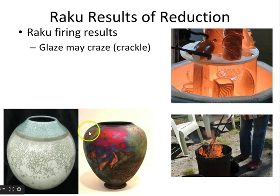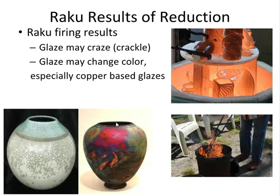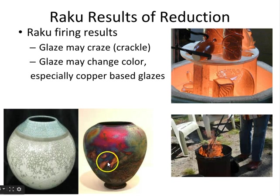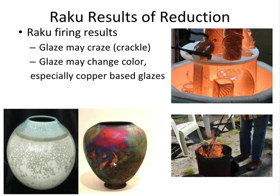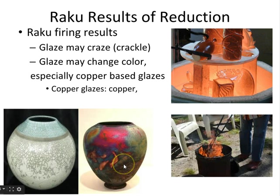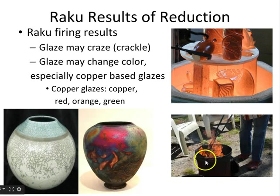Reduction also changes the color of the glaze, especially if it's a copper-based glaze. A clear or white glaze may look white because of the black crackles. A copper matte glaze could be green, could turn bright red, orangey, or metallic copper. Any glaze with copper oxide or copper carbonate — it can change the color dramatically. It's really kind of magical. You can get a wide range of colors using a reduction atmosphere, which is not possible in our indoor electric kiln.